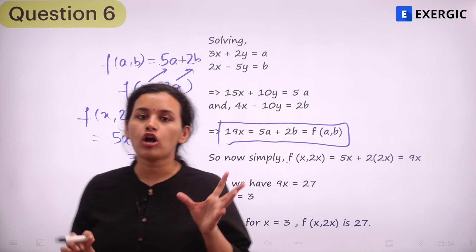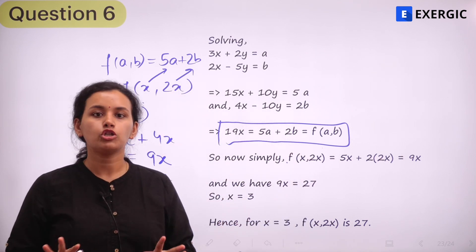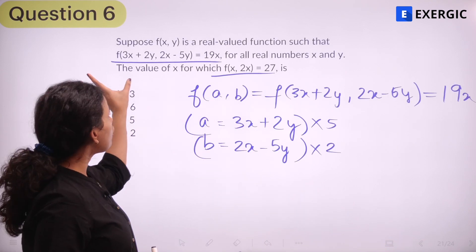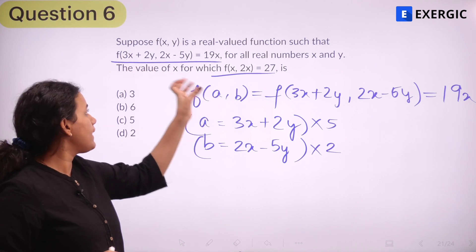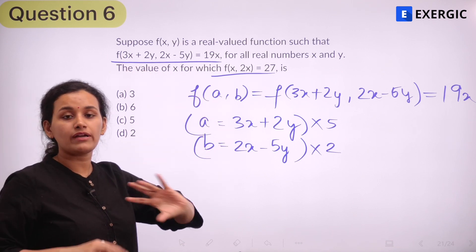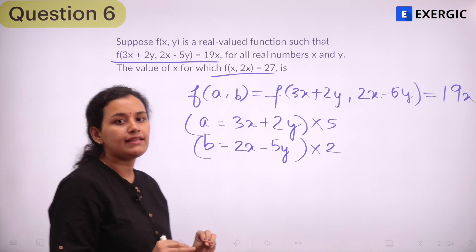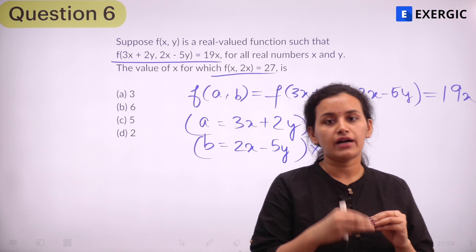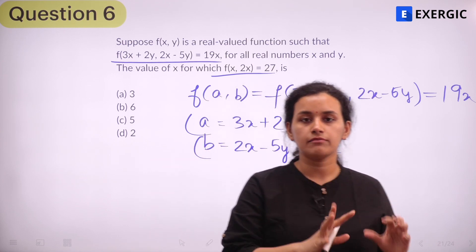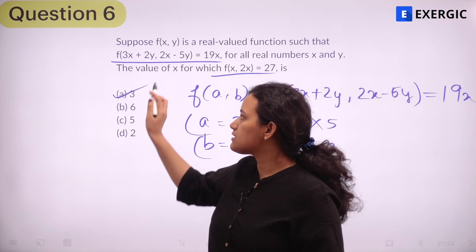The key in this question is learning how to express the function. The problem initially presents f(3x + 2y, 2x − 5y), 19x, and various terms, which looks complex. We need to simplify by eliminating the variable y in order to express the function purely in terms of x and ultimately arrive at the answer.